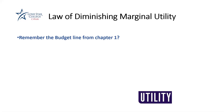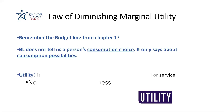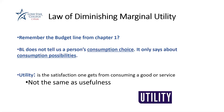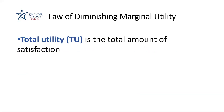When it comes to utility, we should talk about two important concepts. The first one is called total utility and the other one is called marginal utility. Total utility is total satisfaction from consumption. We use TU when we want to talk about total utility — TU stands for total utility, that's your total satisfaction.